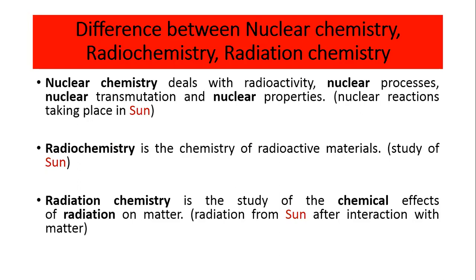First, let's look at the different terms we use and the different fields of chemistry dealing with the nucleus or radioactivity. The first branch is nuclear chemistry, which deals with radioactivity, nuclear processes, nuclear transformation, and nuclear properties — we study the nucleus of the element. Another branch is radiochemistry, which is particularly the study of radioactive materials. The third field is radiation chemistry, which is about the study of the chemical effects of radiation on matter.